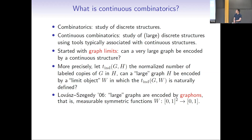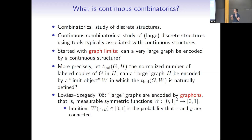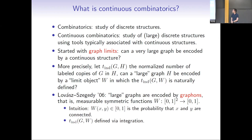Graphons are symmetric measurable functions from the unit square to the interval. The way you want to interpret a graphon is as if it were an adjacency matrix of a graph over the interval, but you're allowed fractional edges. The intuition is that W(x,y) is going to be the probability that x and y are connected. With this intuition, it's very easy to compute densities of finite graphs in a graphon via integration.